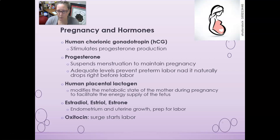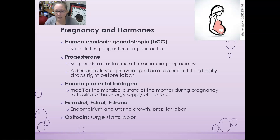Adequate levels of progesterone will prevent preterm labor, and it will naturally start dropping right before labor — we don't know exactly what the signal is, but progesterone starts going down around the time of labor. Human placental lactogen modifies the metabolic state of the mother during pregnancy to facilitate the energy supply of the fetus, making mom hungrier and prioritizing fetal nutrient needs.